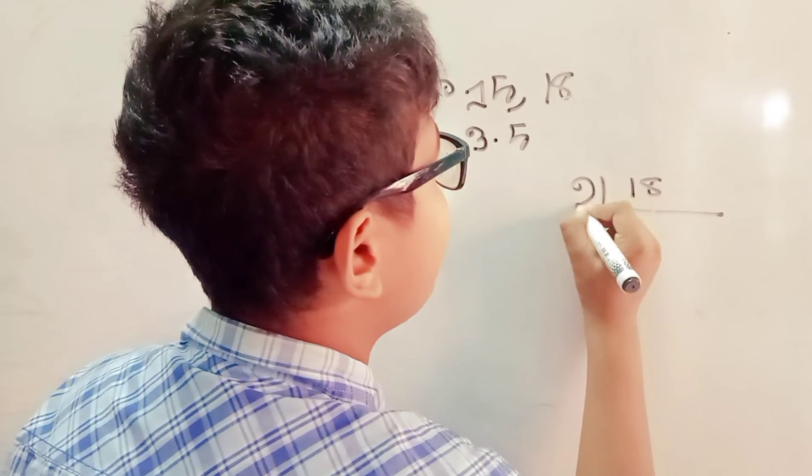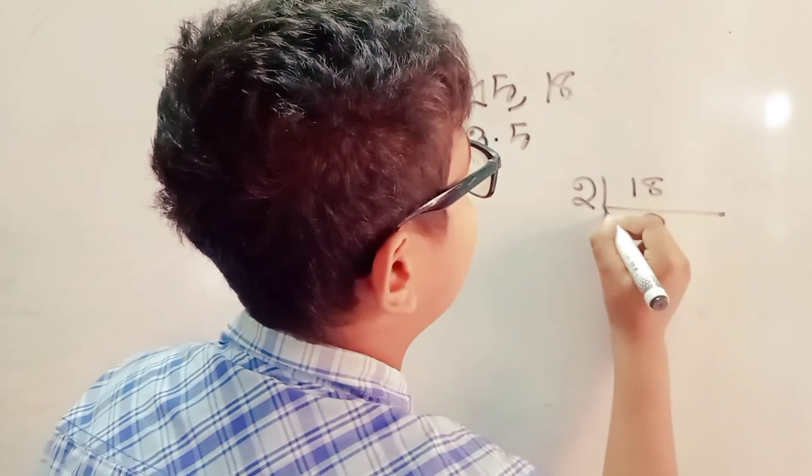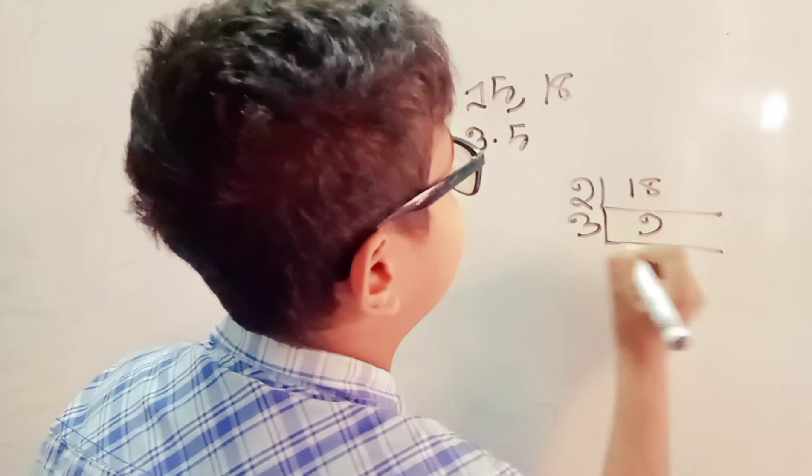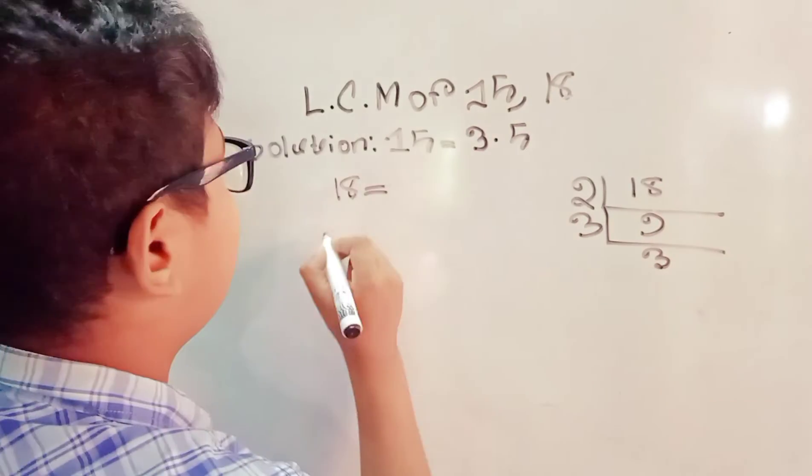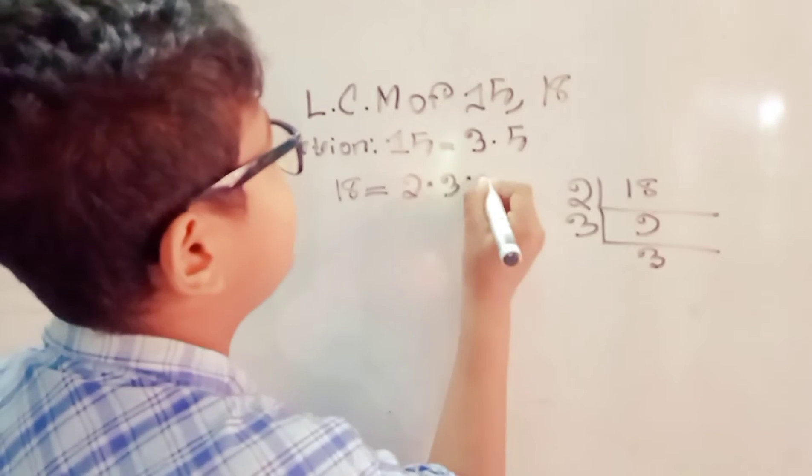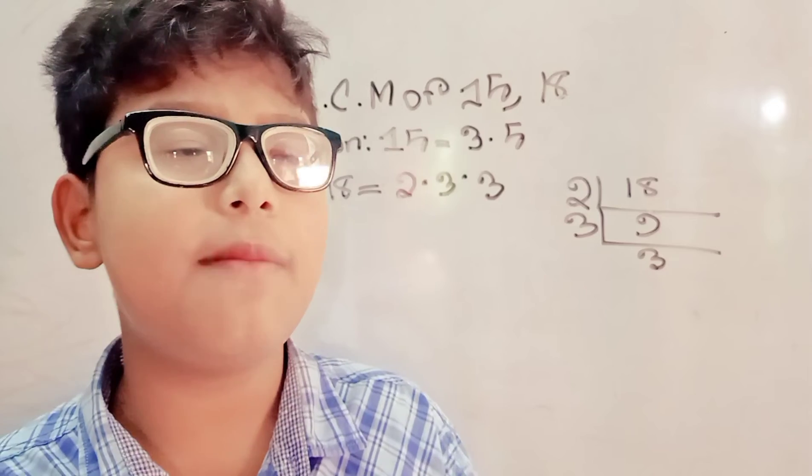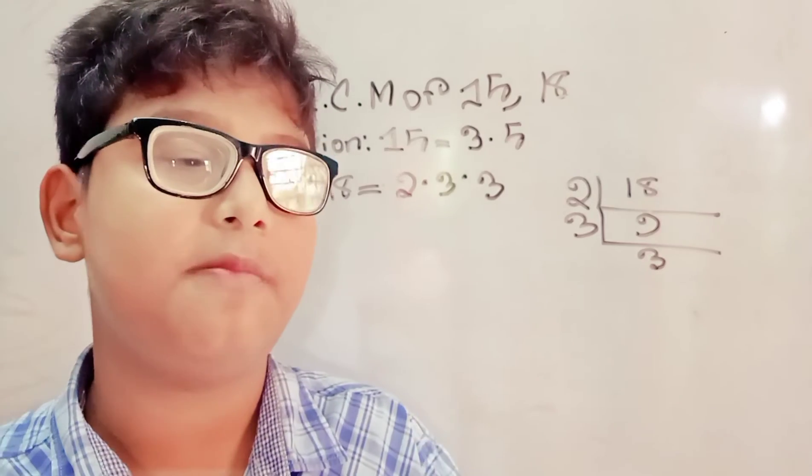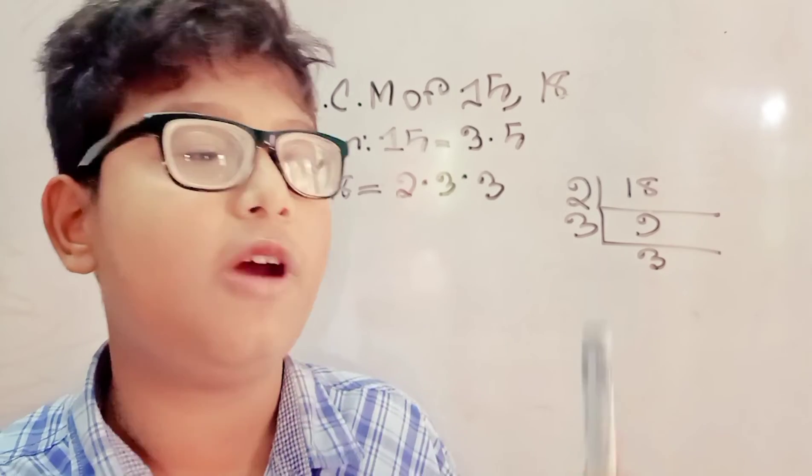2, 9 into 18. 3, 3 into 9. So 18 equals 2 into 3 into 3. Now write each number as a product of primes, matching primes vertically when possible.